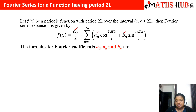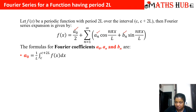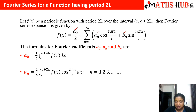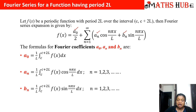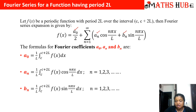These are called the Fourier coefficients and they are calculated using the following formulas. a0 = (1/L) ∫ from c to c+2L of f(x) dx — we integrate over the entire period. Similarly, a_n = (1/L) ∫ from c to c+2L of f(x) cos(nπx/L) dx — we multiply by the cosine term. And b_n = (1/L) ∫ from c to c+2L of f(x) sin(nπx/L) dx. In both cases for a_n and b_n, n runs from 1 to infinity.